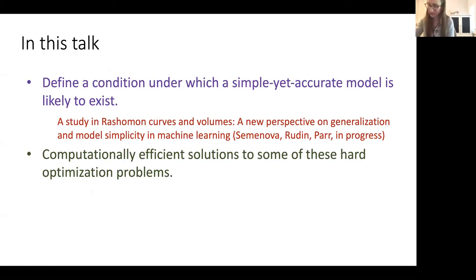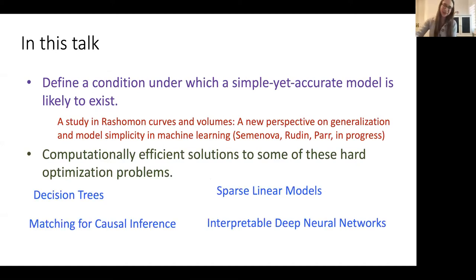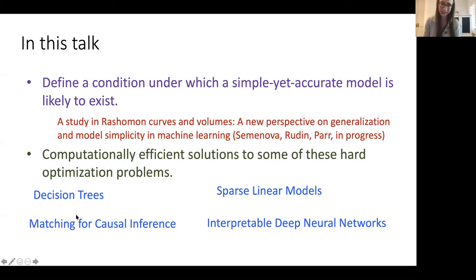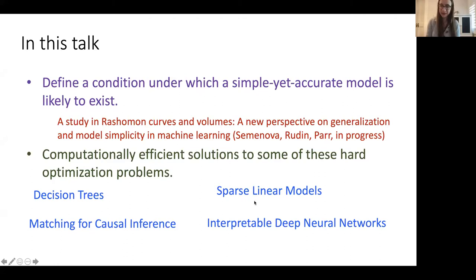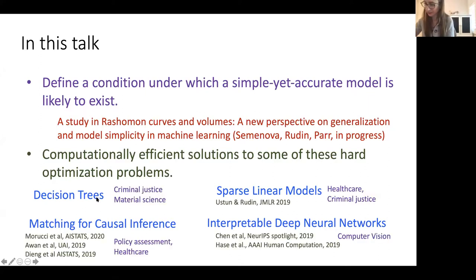At the very least I can try to create computationally efficient solutions to these hard optimization problems, to give people an alternative to black boxes. My lab currently works in four areas: decision trees, matching for causal inference, sparse linear models with integer coefficients (scoring systems), and interpretable deep neural networks. Today I'll just talk about decision trees.